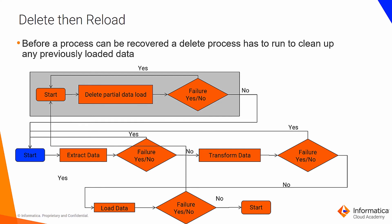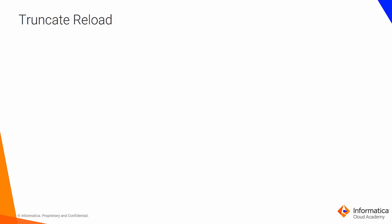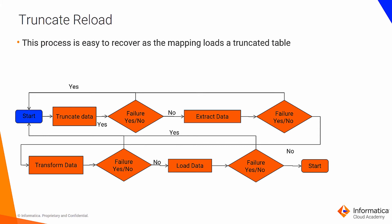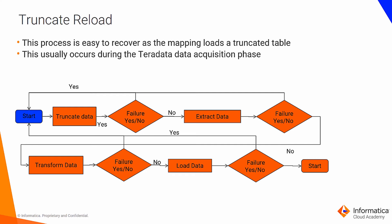The third recovery type is truncate reload. This process is easy to recover — all data is reloaded, so re-running does not require special consideration. This usually occurs during the Teradata data acquisition phase. Initially, data is truncated; if this task fails, it is restarted. Otherwise, the ETL process starts. Each time any task fails, the data is truncated and the process is restarted from the initial point.